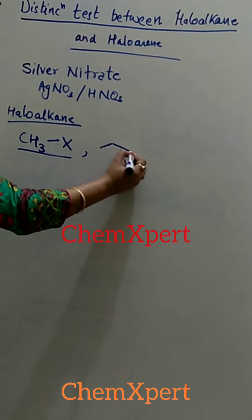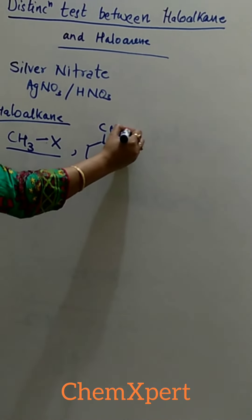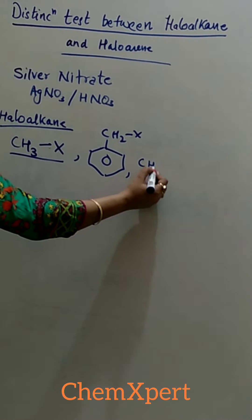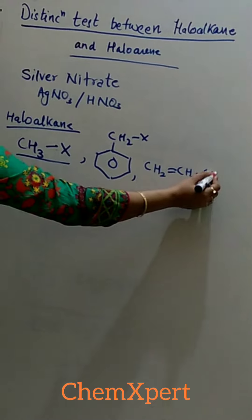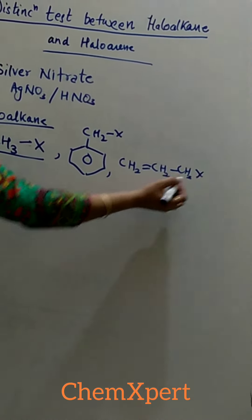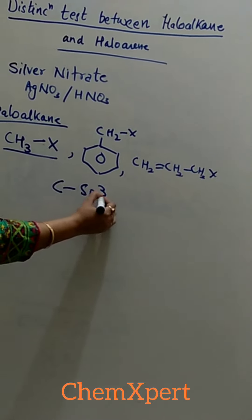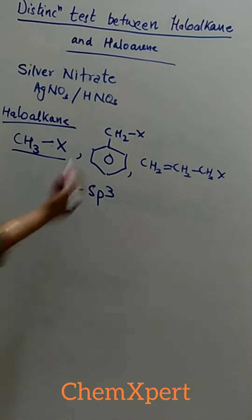Then there is one more example, benzyl halide, that is CH2X, and next one is the allyl halide. In all three cases, the halogen is attached to carbon which is sp3 hybridized.